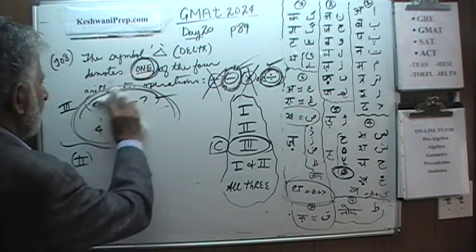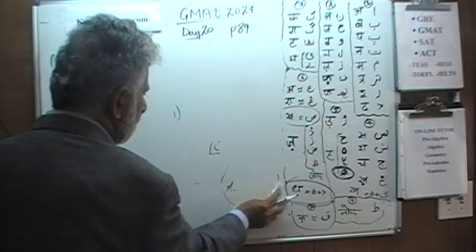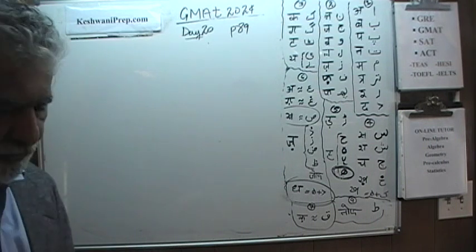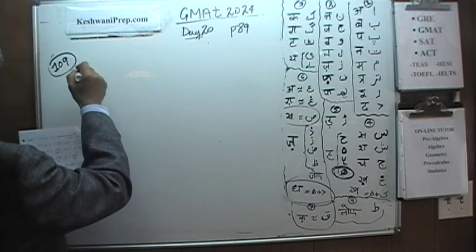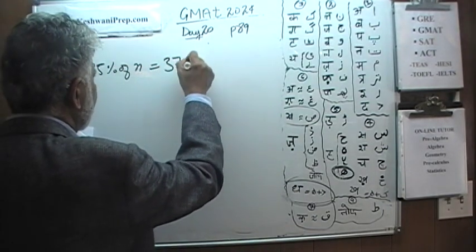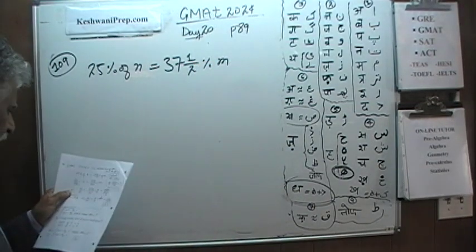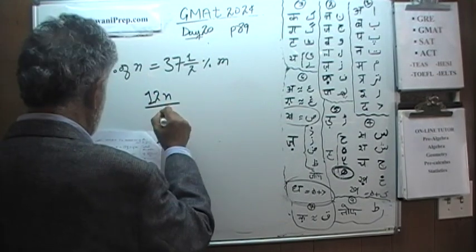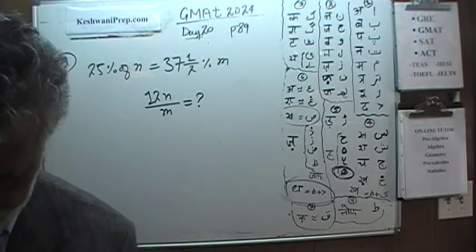Number 109. Again in 109, as soon as I set up the problem you pause the video and do it yourself. In 109 we are told that 25% of n is equal to 37 and a half percent of m. And the question is what they are looking for is what is the value of 12m over n.